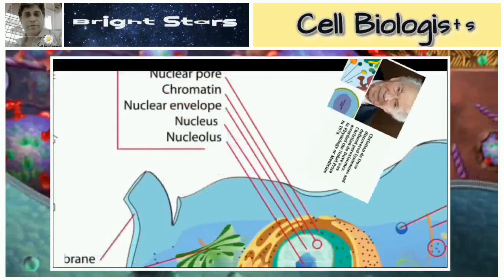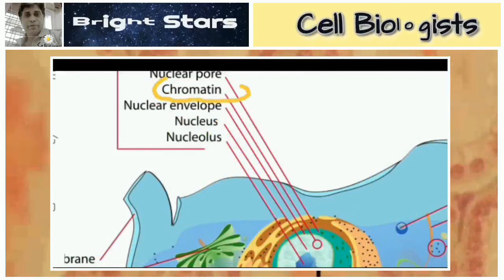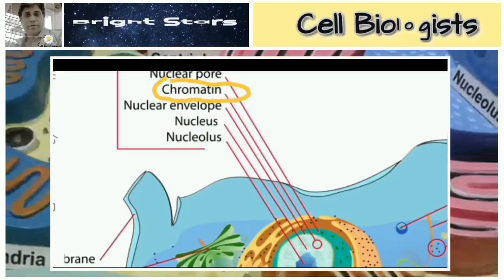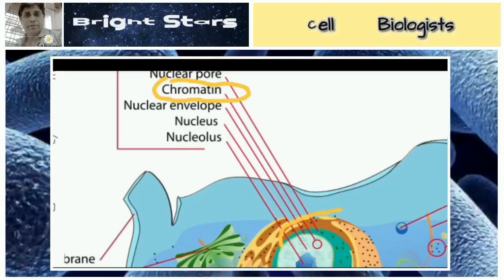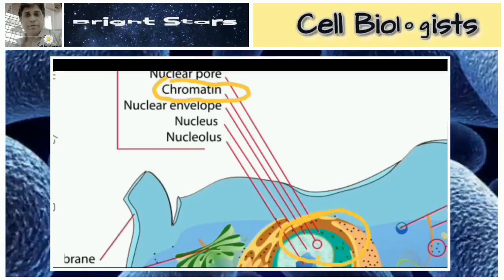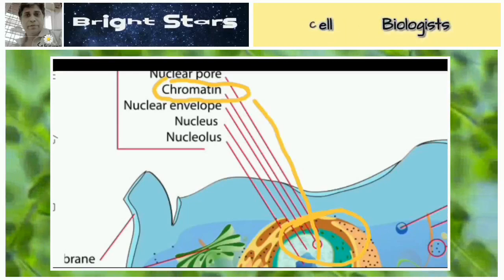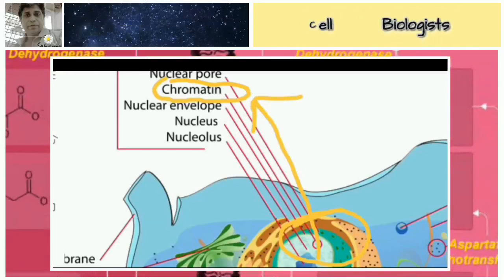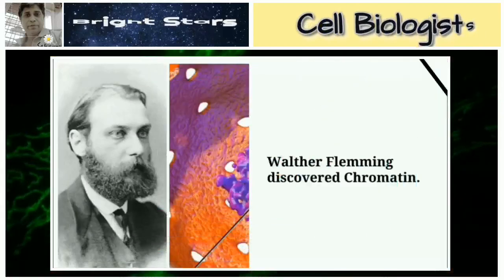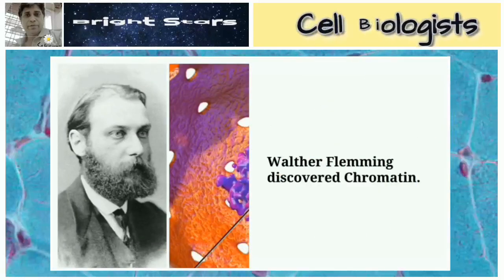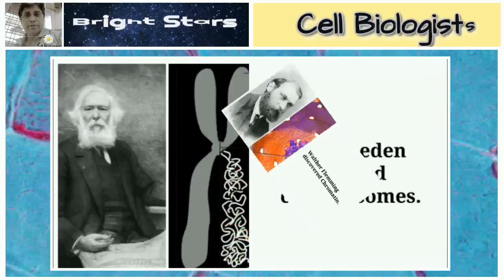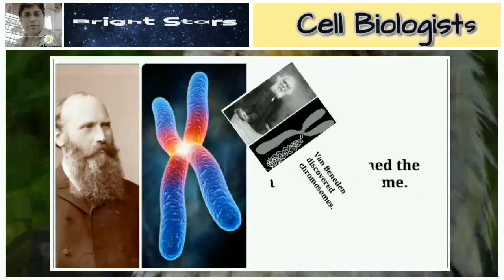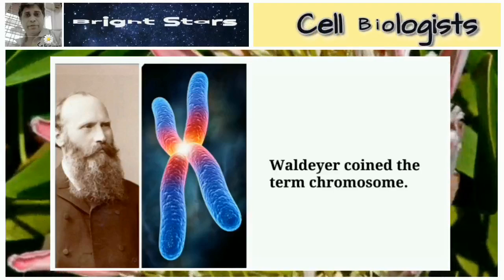Chromatin is a network of colorfully stained substance present in the nucleus. Walter Flemming discovered chromatin. Van Beneden discovered chromosomes, and Waldeyer coined the term 'chromosome.'